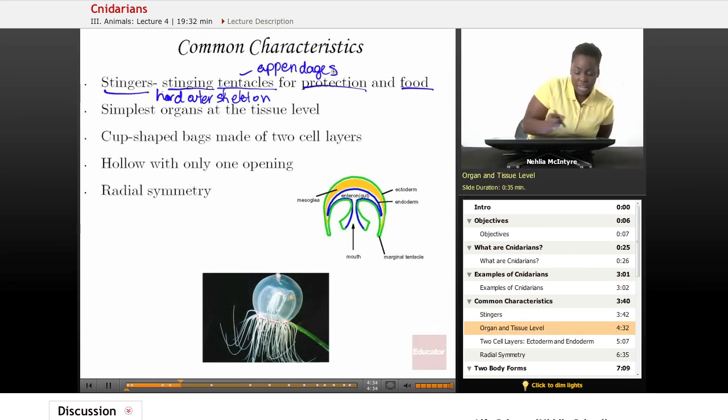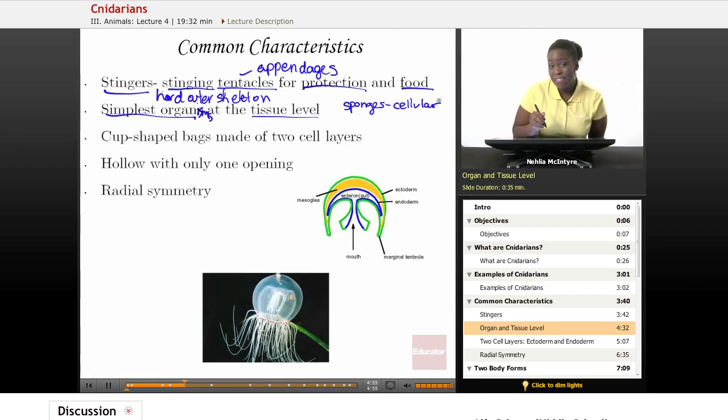Also, another characteristic is that all Cnidarians are actually the simplest organisms at the tissue level. Again, sponges are the simplest animals at the cellular level. But sponges don't have organized cells that make up a tissue that can help it to do a specific function. So Cnidarians actually are the simplest organisms at that level.